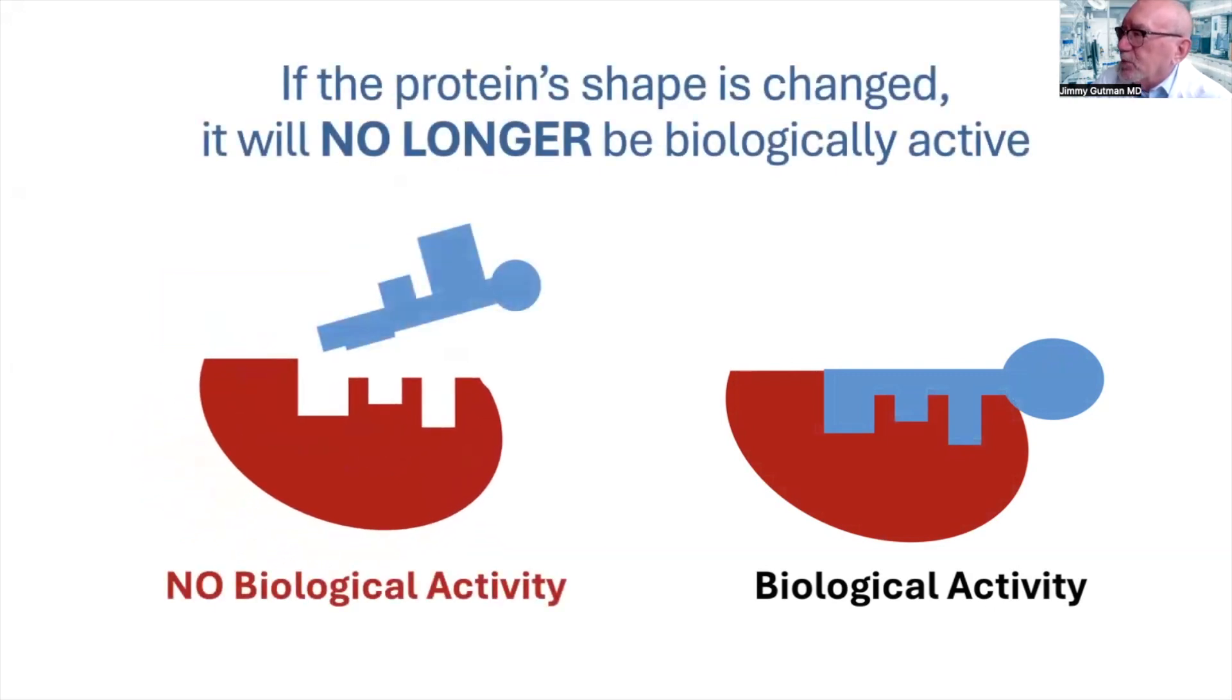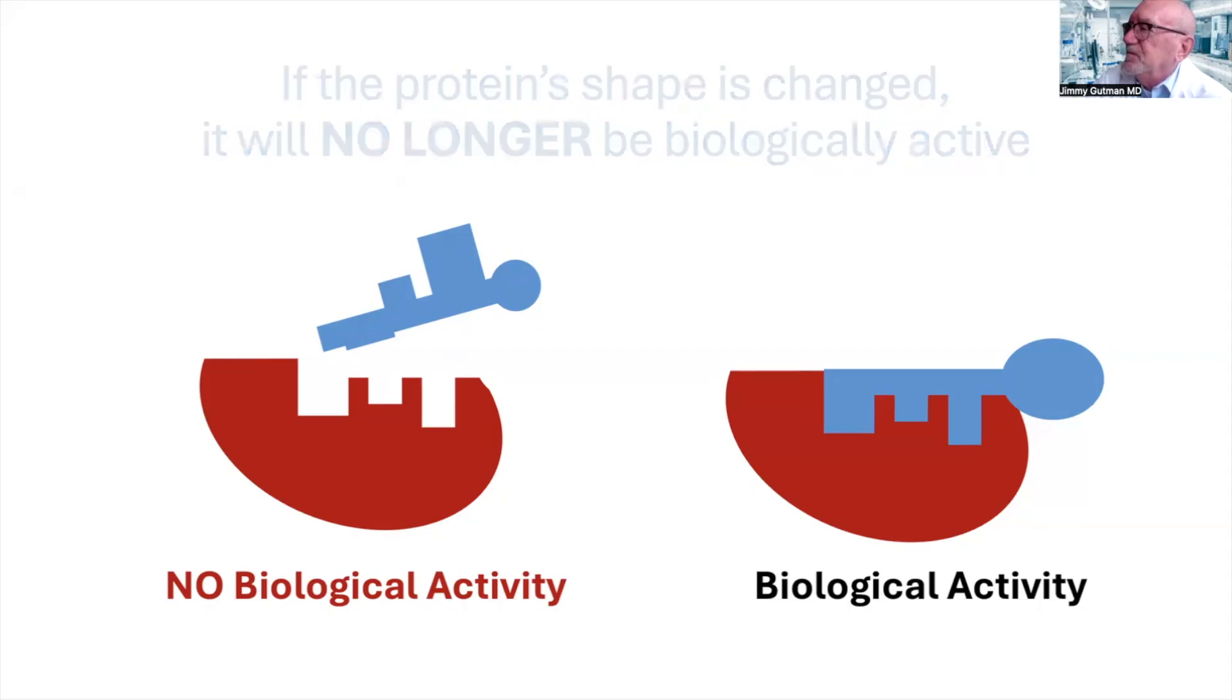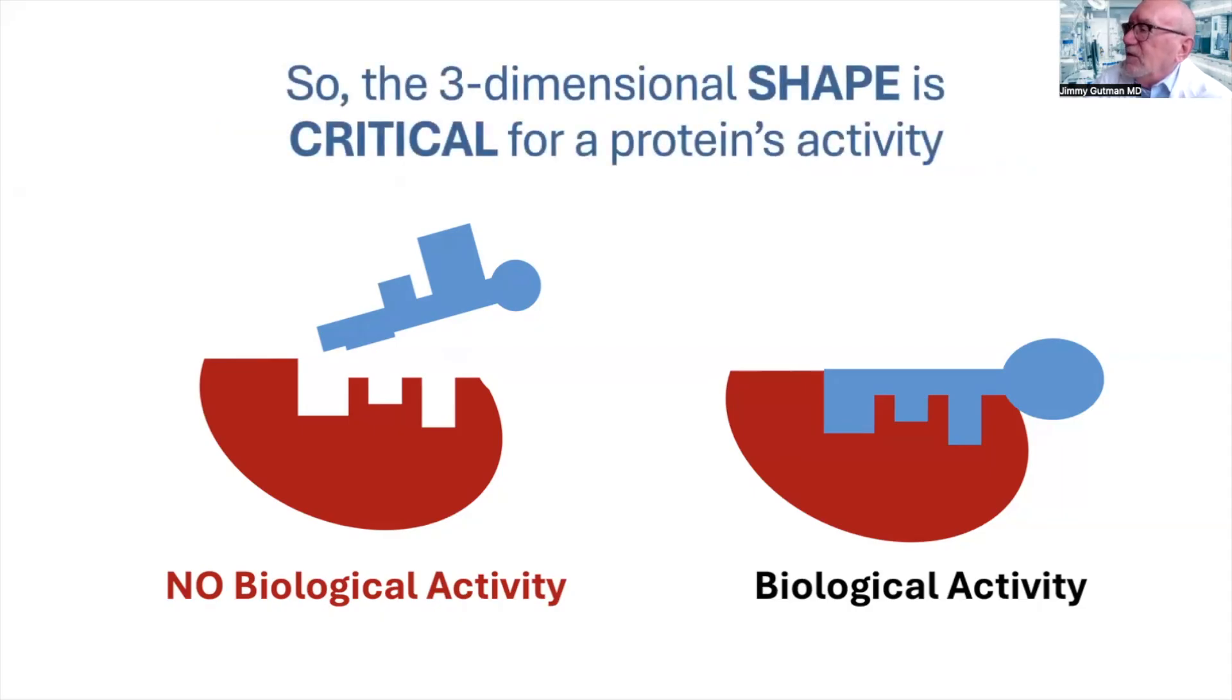Well, what if the protein has changed shape? What if the protein has been altered for some reason? It will not fit into the receptor, and no response can be stimulated. So we see that the three-dimensional shape is critical for the action of the protein. It's critical for the protein to work.